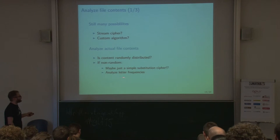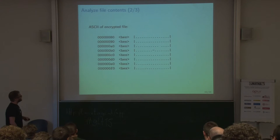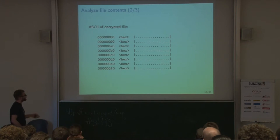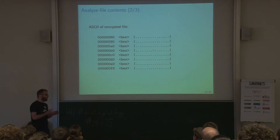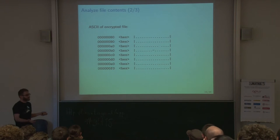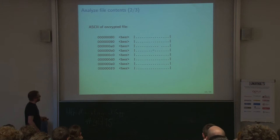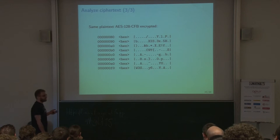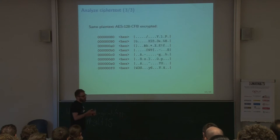You can do a letter frequency analysis: count how often each byte occurs and make nice charts. Looking at the encrypted file as ASCII, you see a lot of dots — non-printable characters. Only a space and a dash are printable, which is strange if it's truly random, since you'd expect a lot of printable ASCII characters. If you encrypt the same plain text with AES, it looks properly random — a lot of garbage. This one, not so much.